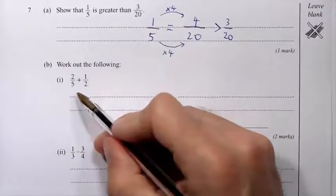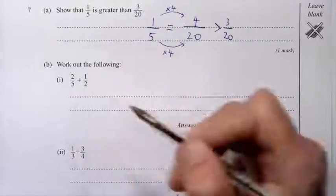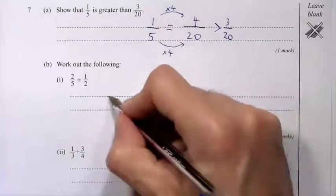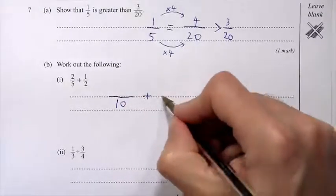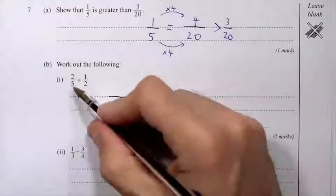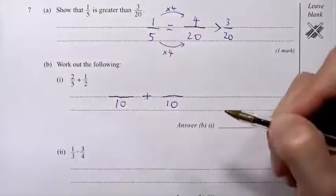And so we're looking for a number that's in the 5 times table and in the 2 times table. And the first number we come across in the times table of both is 10. So if we convert them both into tenths, we should be all right. So 2 fifths is how many tenths?